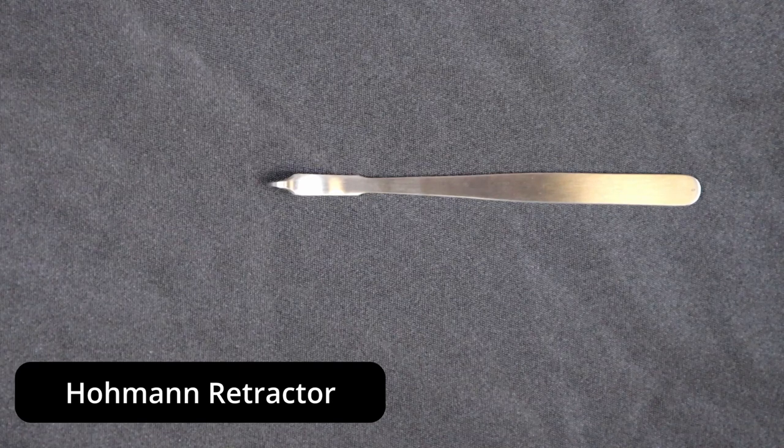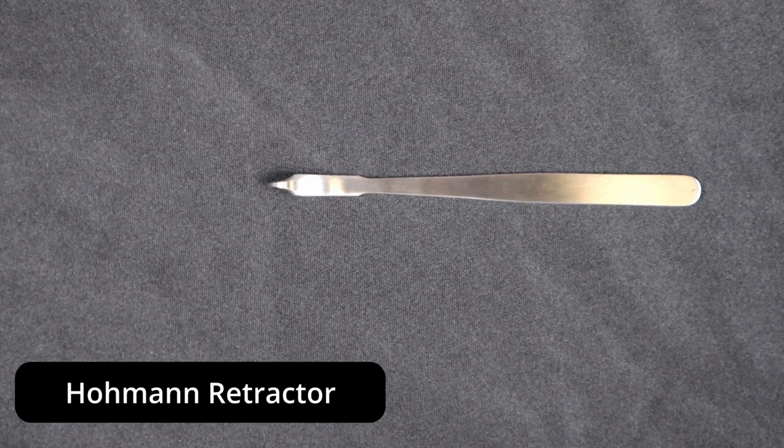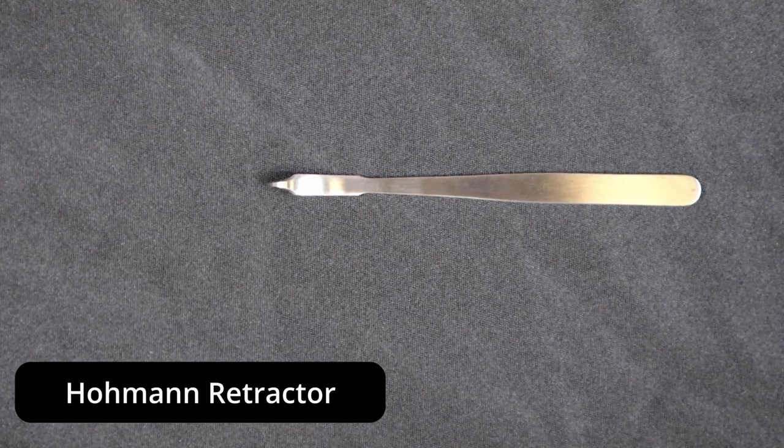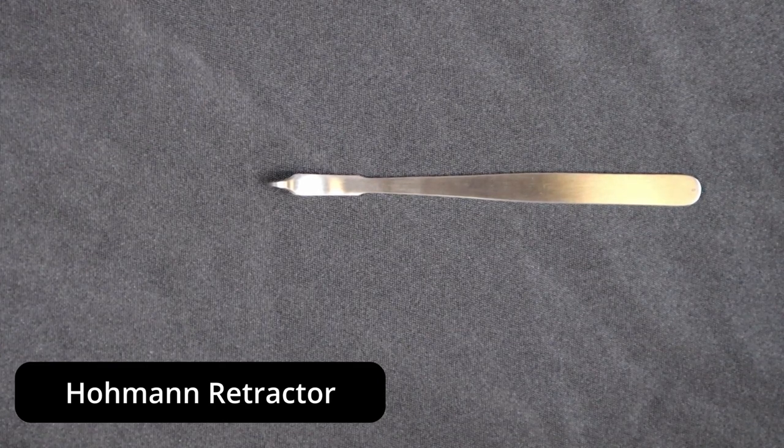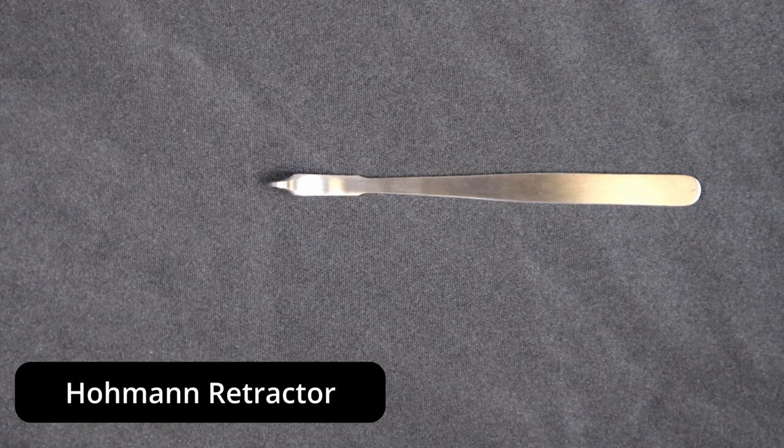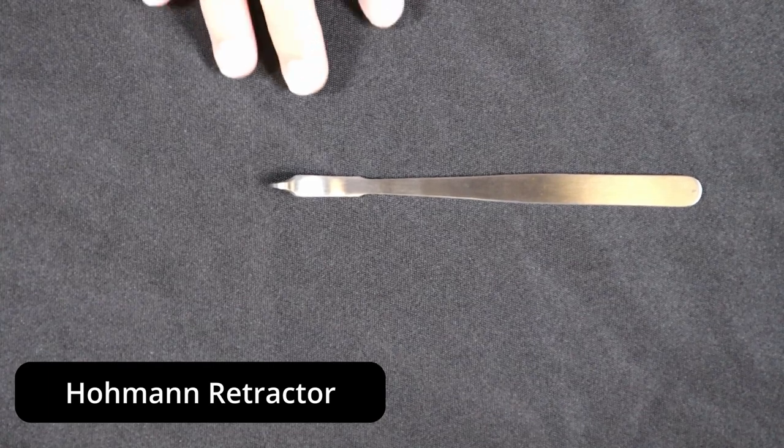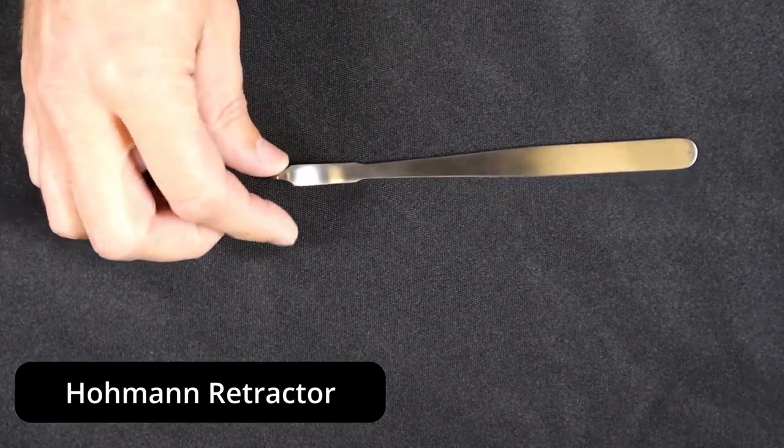You have angles, you have blunt tips, you have other tips that are not necessarily blunt but not sharp either. So it's very important to know what is in front of you as you're processing these Hohmanns in particular.